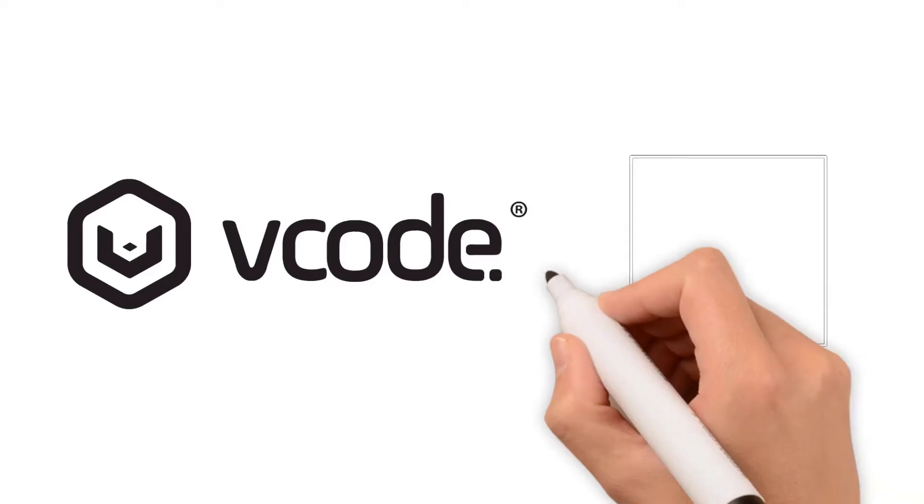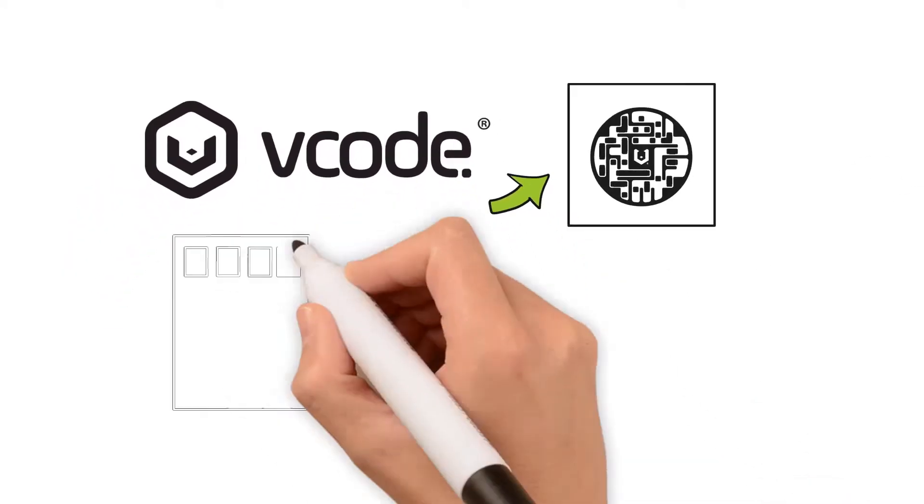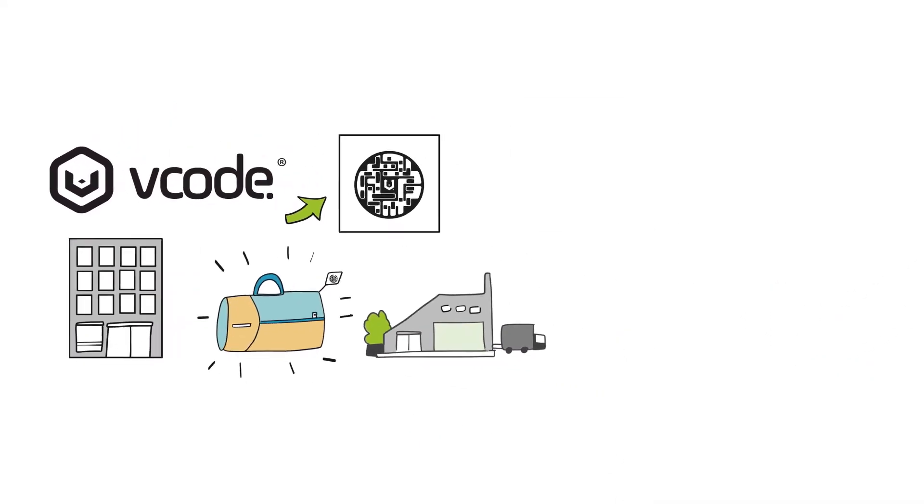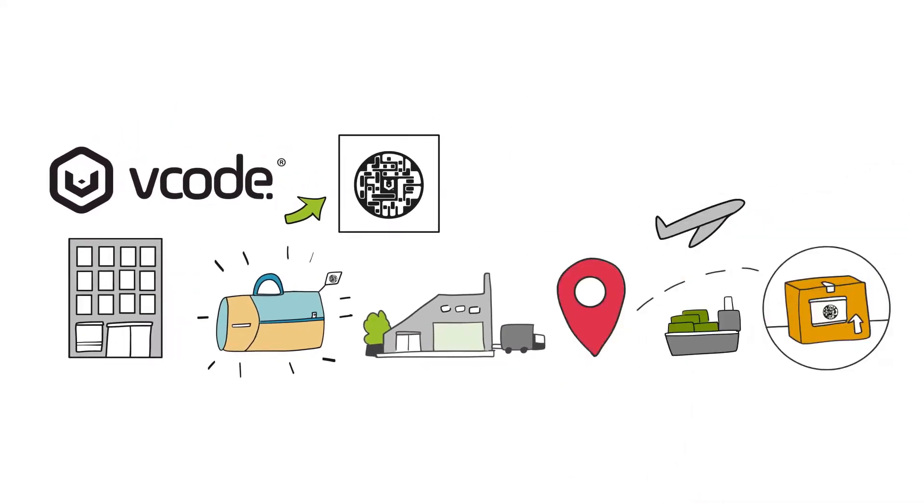By using the vCode app or integrating with current infrastructure, a brand or manufacturer can easily uniquely mark and then interact with the items they make and distribute.